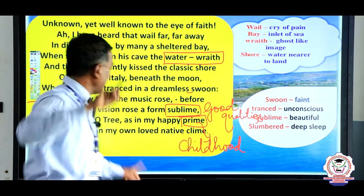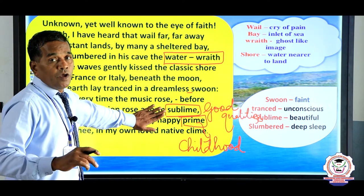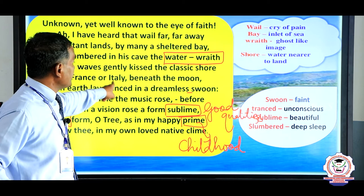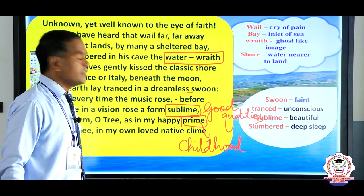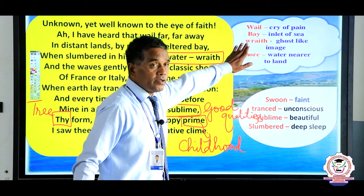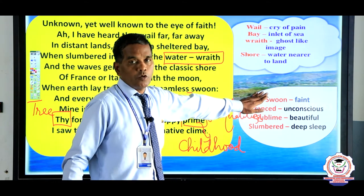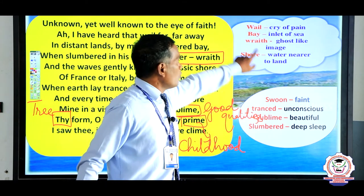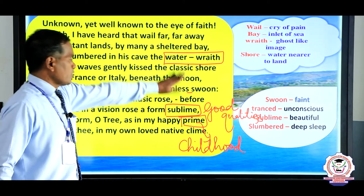Though she lives far away, she talks about this beautiful tree which is no longer near her — she lives in Italy or France. Still she would see and hear the cry of the tree. These are the vocabulary and glossary to learn; they may come in the appreciation question. For example: what do you mean by 'slumbered'? What is 'wraith'? Kindly note down these glossary words.